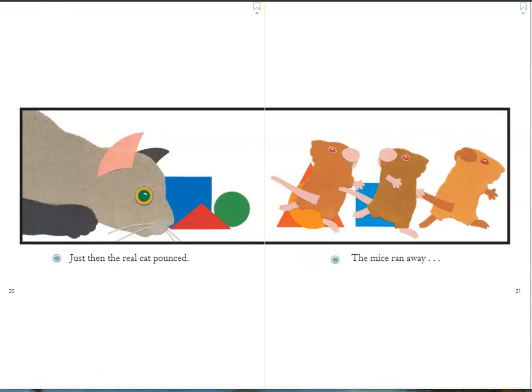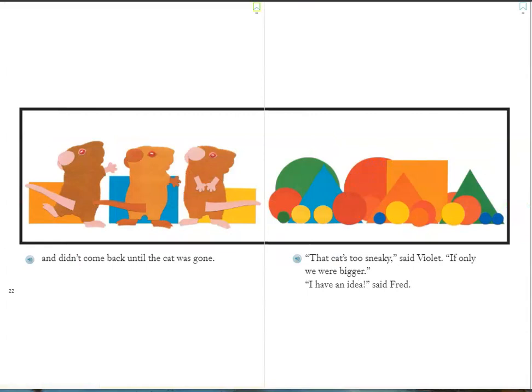Just then, the real cat pounced. The mice ran away and didn't come back until the cat was gone.